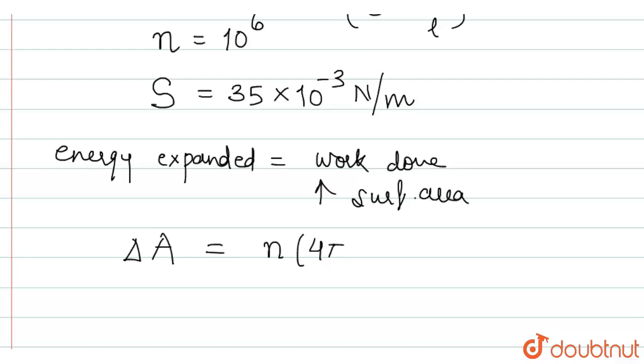The increase in surface area is n into 4 pi small r square minus 4 pi into capital R square. Over here we have introduced n for the number of small droplets and since big droplet is only 1, therefore we have multiplied just 1 in front of it. This is equation number 1.